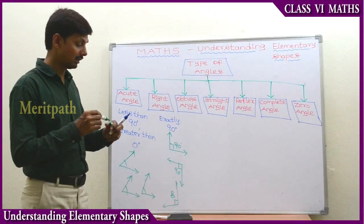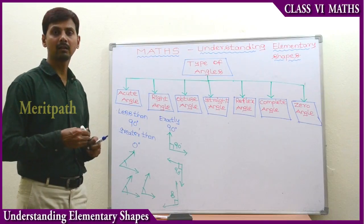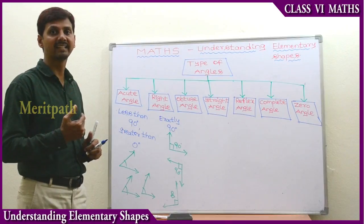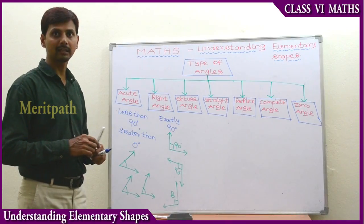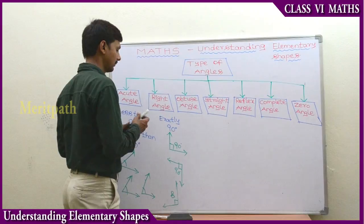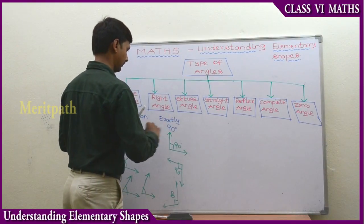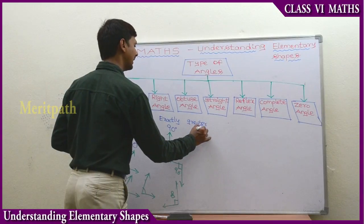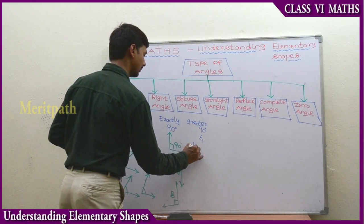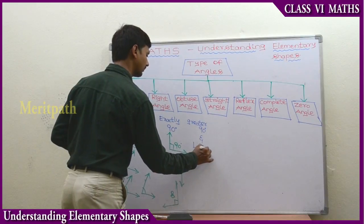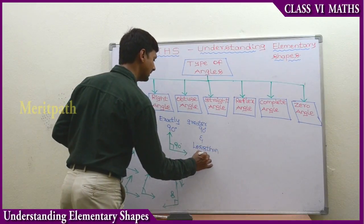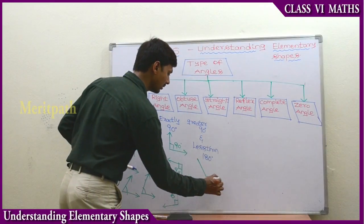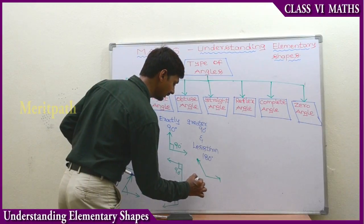Obtuse angle: the angle which measures greater than 90 degrees and less than 180 degrees - we call it an obtuse angle. Greater than 90 degrees and less than 180 degrees - those angles are obtuse angles. These are the examples for obtuse angle.